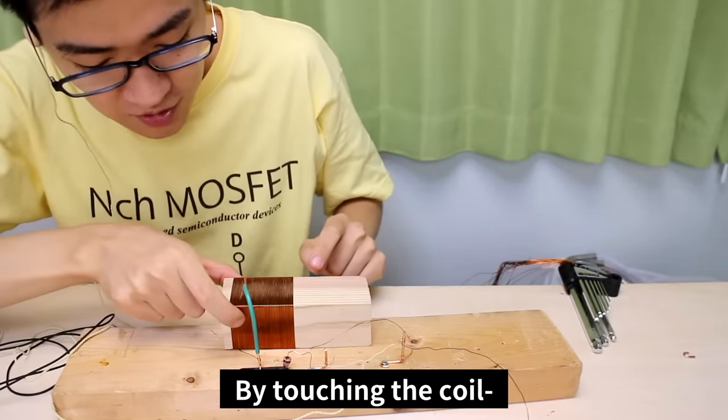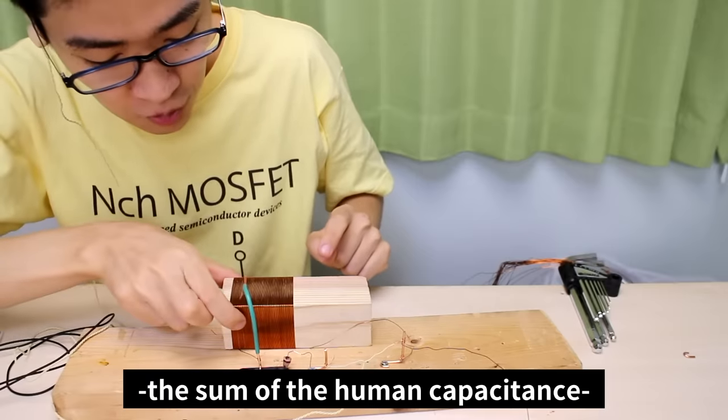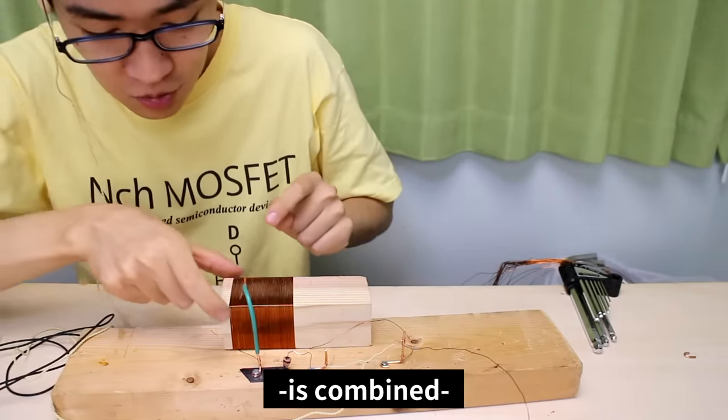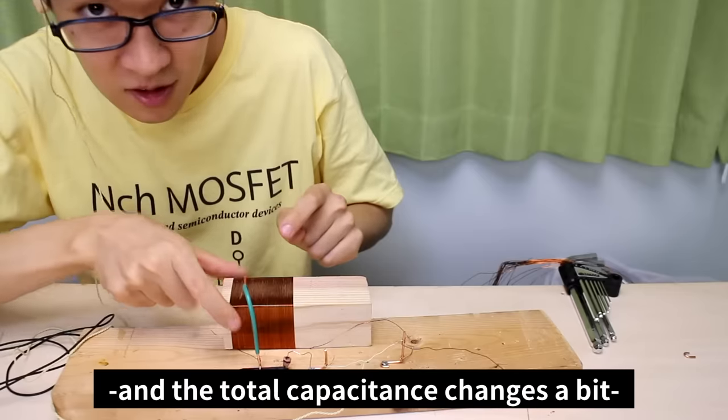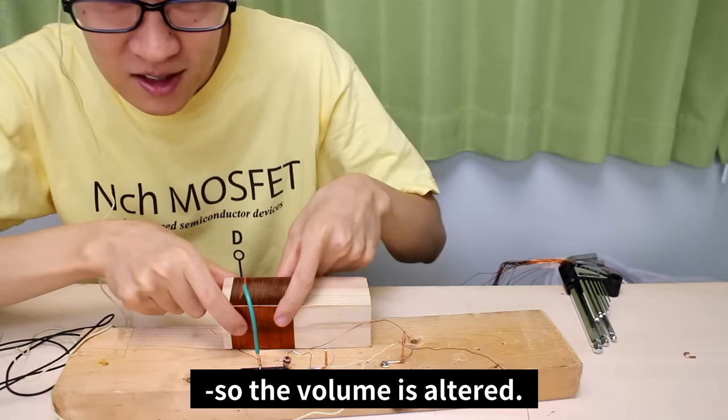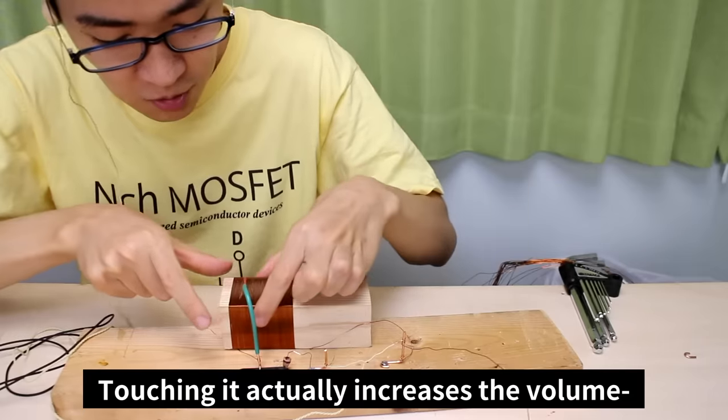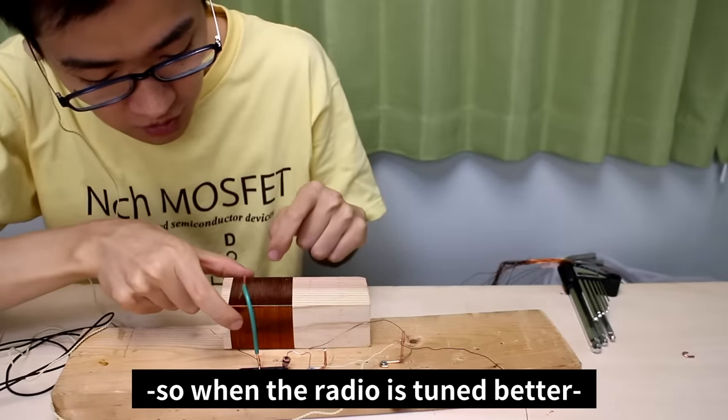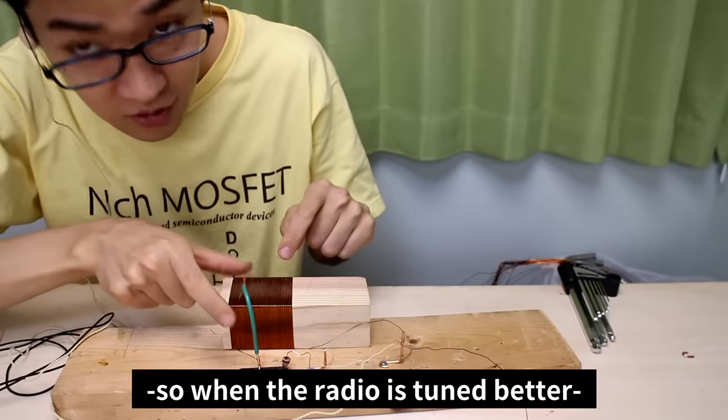By touching the coil, the sum of the human capacitance and the coil's capacitance is combined. And the total capacitance changes a bit, so the volume is altered. Touching it actually increases the volume, so the radio is tuned better when I'm not touching the coil.